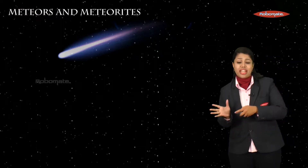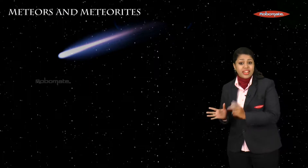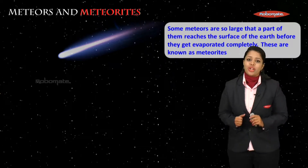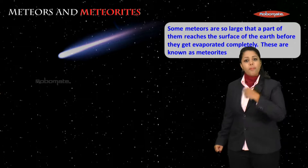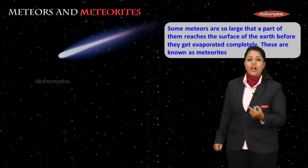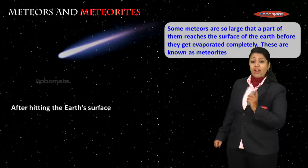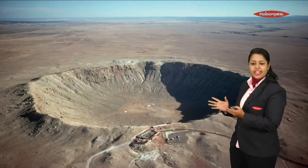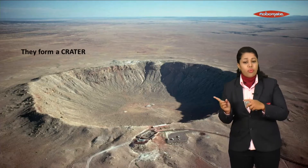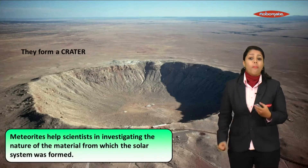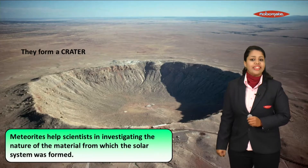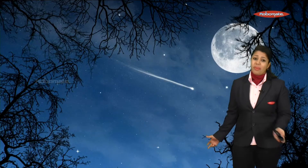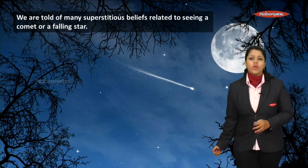Now, what are meteorites? Some meteors are so large that a part of them reaches the surface of the Earth before they get completely evaporated — these are called meteorites. After hitting the Earth's surface, they form big craters. Meteorites are very important because they help scientists investigate the nature of the material from which our solar system was formed.